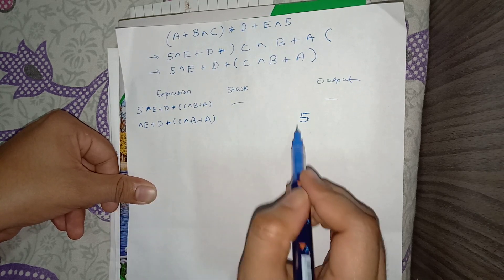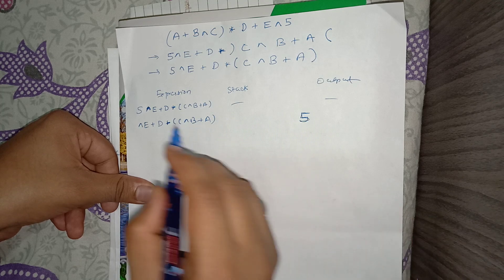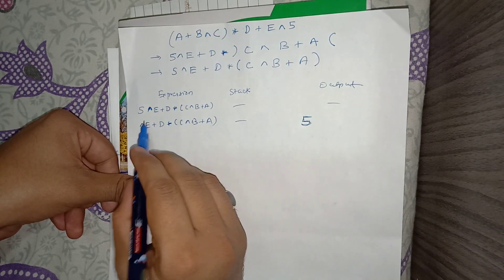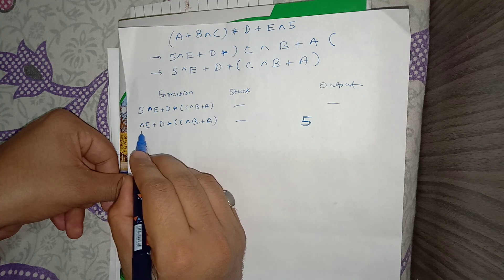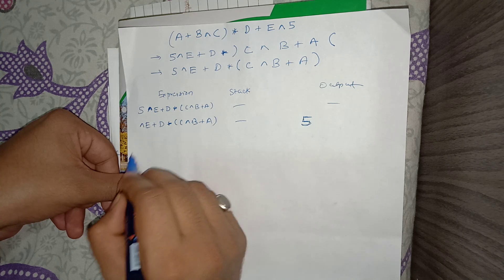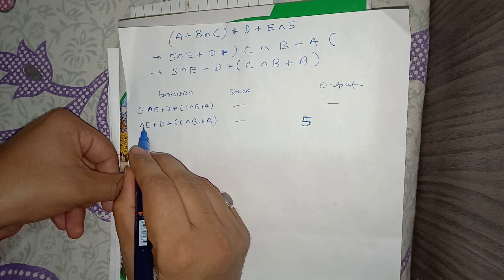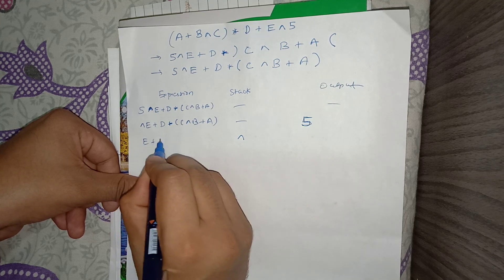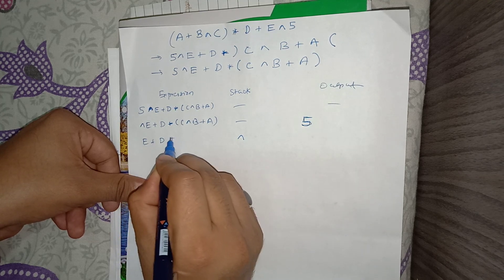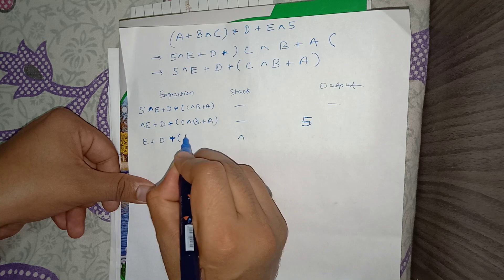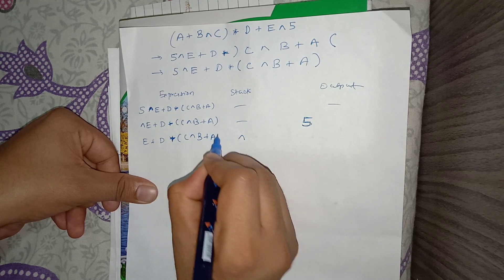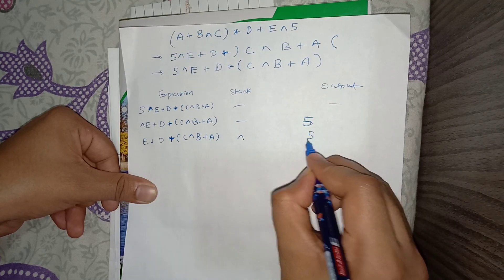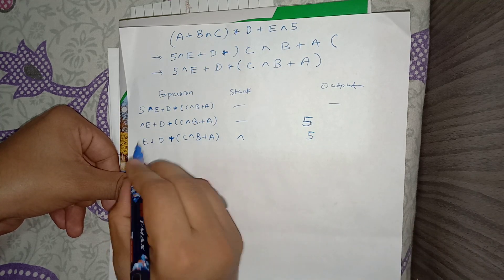The next token is XOR, which is an operator, so it goes onto the stack. The remaining expression is plus, D, into, C, XOR, B, plus, A, and the output still holds 5.